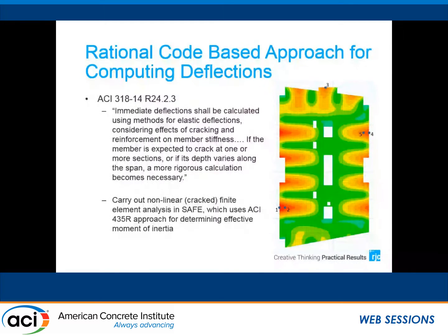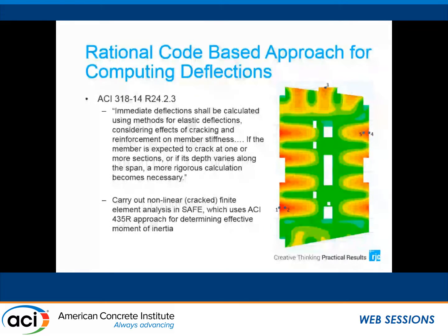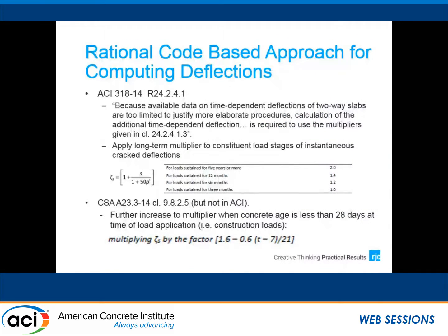I want to emphasize that in everything we're doing, we're following the intent of the ACI codes. ACI 318 requires a rigorous calculation of inelastic cracked deflections, so we're using SAFE software — a non-linear cracked finite element analysis with cracking moment of inertia calculations per ACI 435 approaches. ACI 318 acknowledges variability of creep and shrinkage data but provides a closed-form equation for long-term multipliers. We use the software to calculate instantaneous cracked deflections, then apply the appropriate long-term multipliers from ACI.